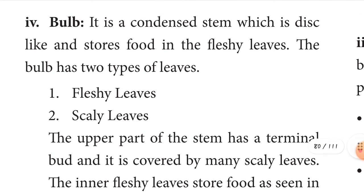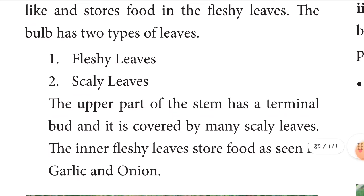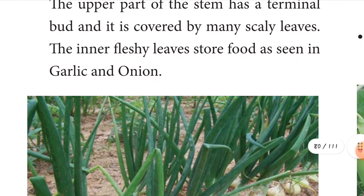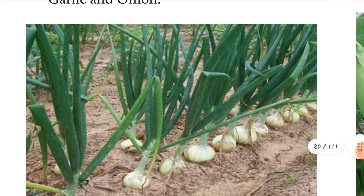Next is the bulb — example onion and garlic. The bulb is a condensed disc-like stem that stores food in fleshy leaves. The bulb has two types of leaves: fleshy leaves and scaly leaves. The upper part of the stem has a terminal bud covered by many scaly leaves, while the inner fleshy leaves store food. White onion has a large amount of medicinal properties.